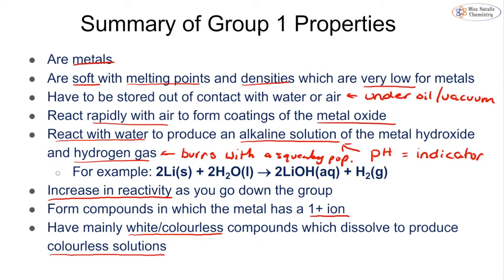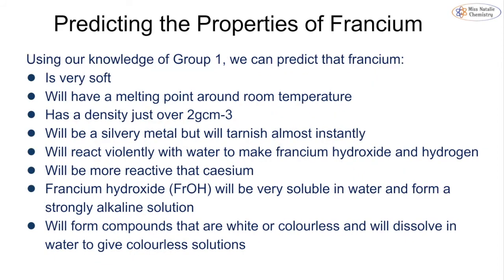We can use all of that information to predict the properties of francium. Francium is an extremely rare metal — there is only about 20 grams of francium on the entire planet Earth. Because of this, it has not been properly or thoroughly analyzed, but since it is in group one we can make predictions.